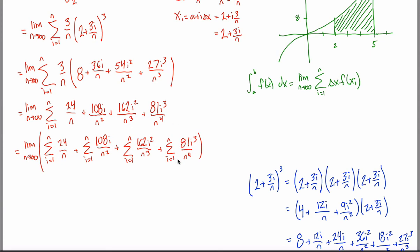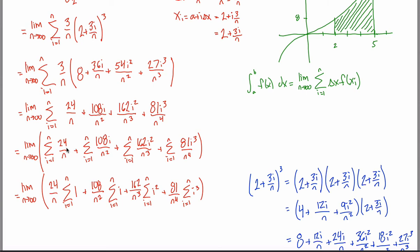This line is equal to the rearranged line, and what's advantageous is now it's easier to see the constants. Take the third sigma for example: the sum from i=1 to n of 162i²/n³. The 162 and n³ are the same in every single term — they're a constant — so you can pull them out in front of sigma. Similarly, 108/n² is a constant, 81/n⁴ is a constant, and in the first term 24/n itself is all a constant with no i at all. I can rewrite this as: 24/n times the sum of 1, plus 108/n² times the sum of i, plus 162/n³ times the sum of i², plus 81/n⁴ times the sum of i³.